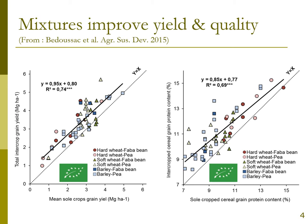As seen in previous talks, intercrops are known to have many advantages, among them the idea that crop mixtures can improve yield and grain quality. On the left figure, we represent the total intercrop grain yield as a function of the mean sole crop grain yield. This data was obtained from 10 years of experiments in different places — south of France, northwest France, and Denmark — with durum wheat, soft wheat, and barley intercropped with fababean and peas, all in organic farming production.